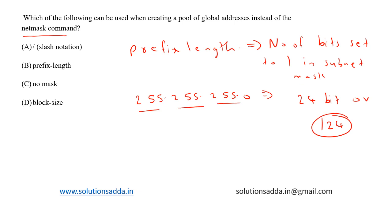It is written in the slash notation - this slash followed by this number. This number denotes the number of continuous ones present in the subnet mask. So option B, prefix length, is the correct answer.